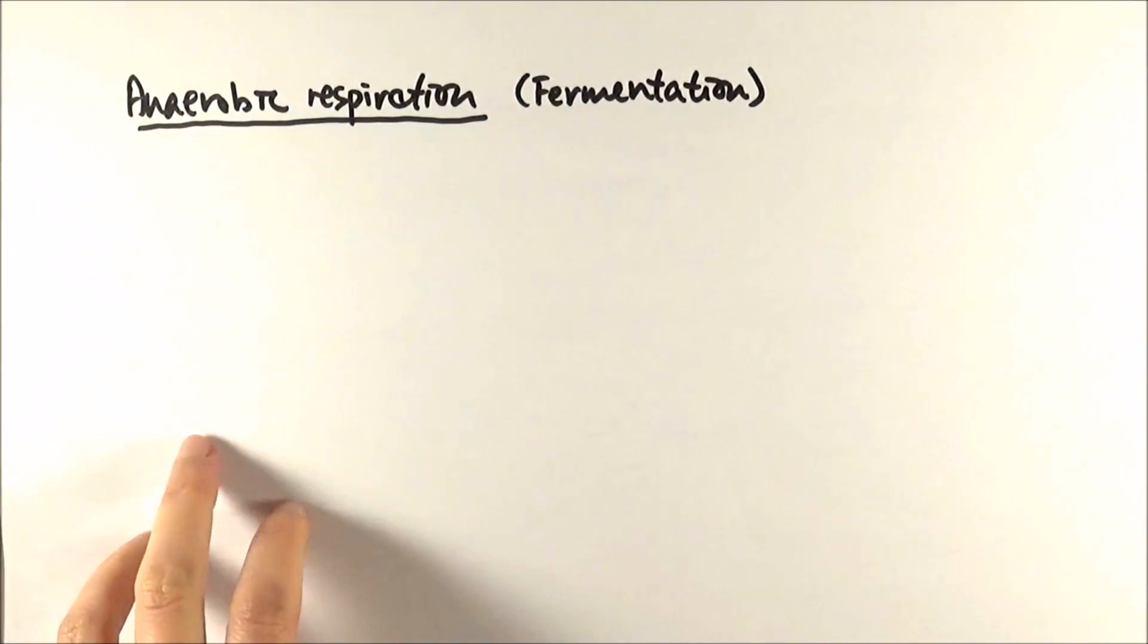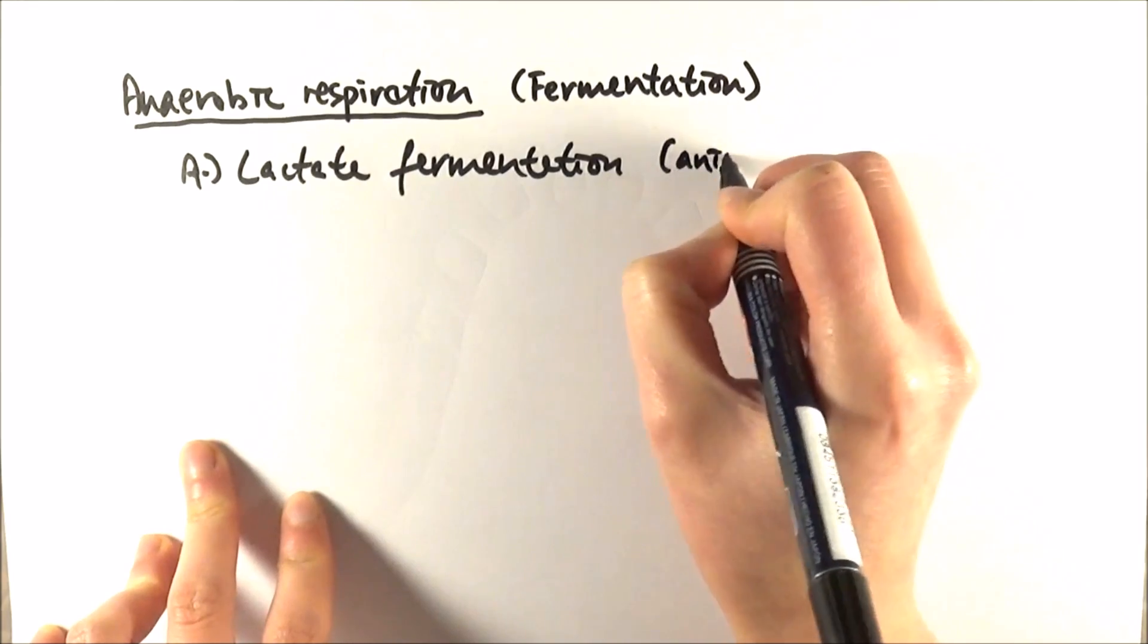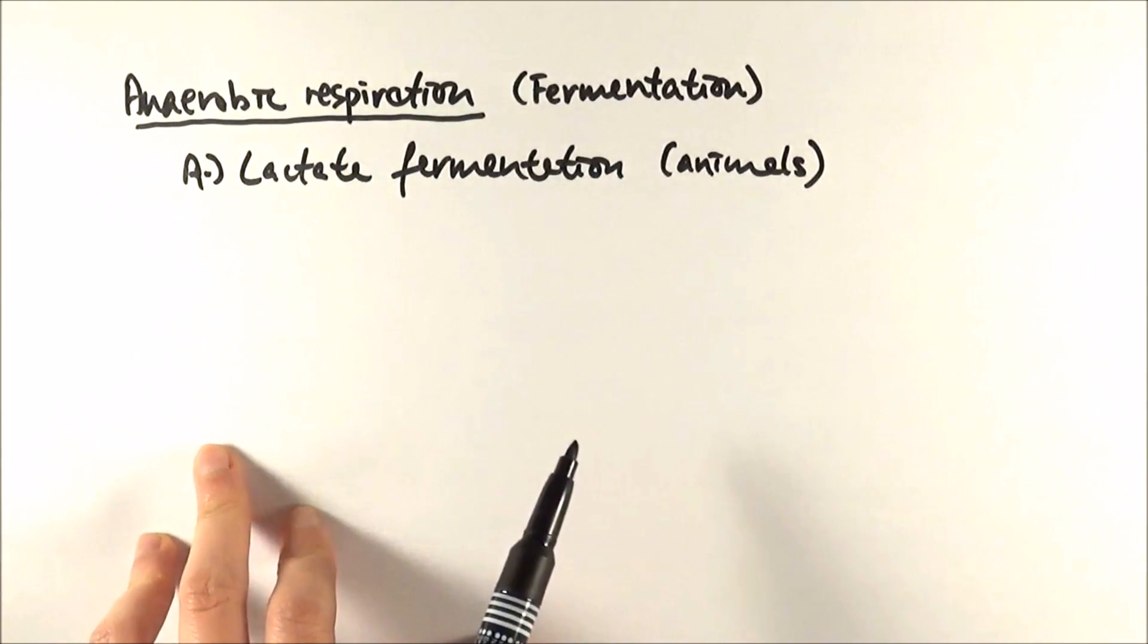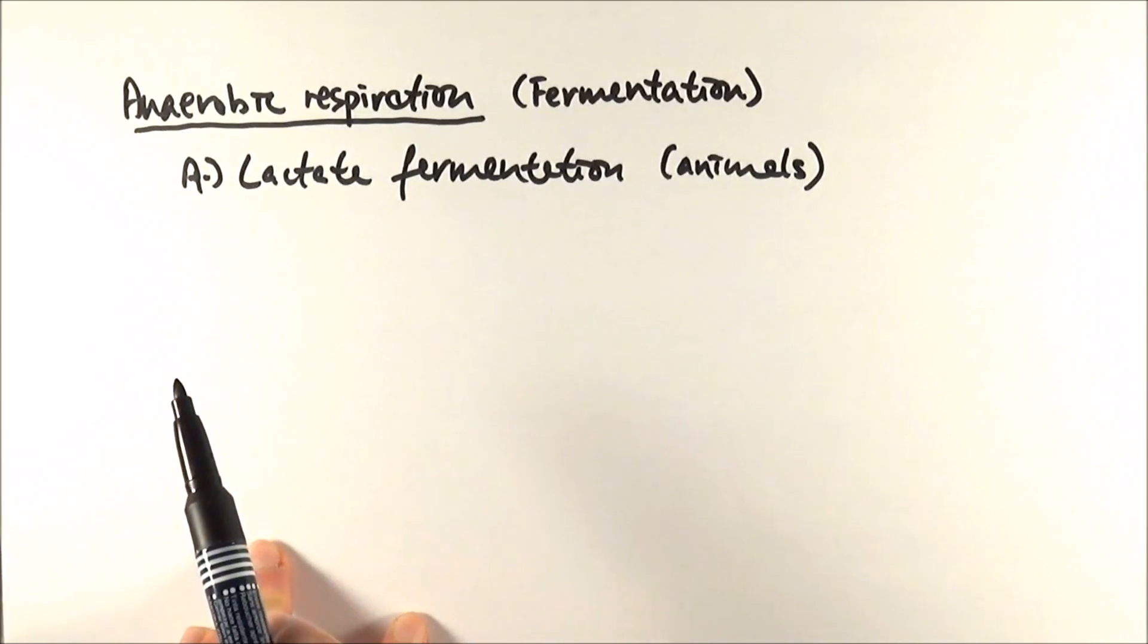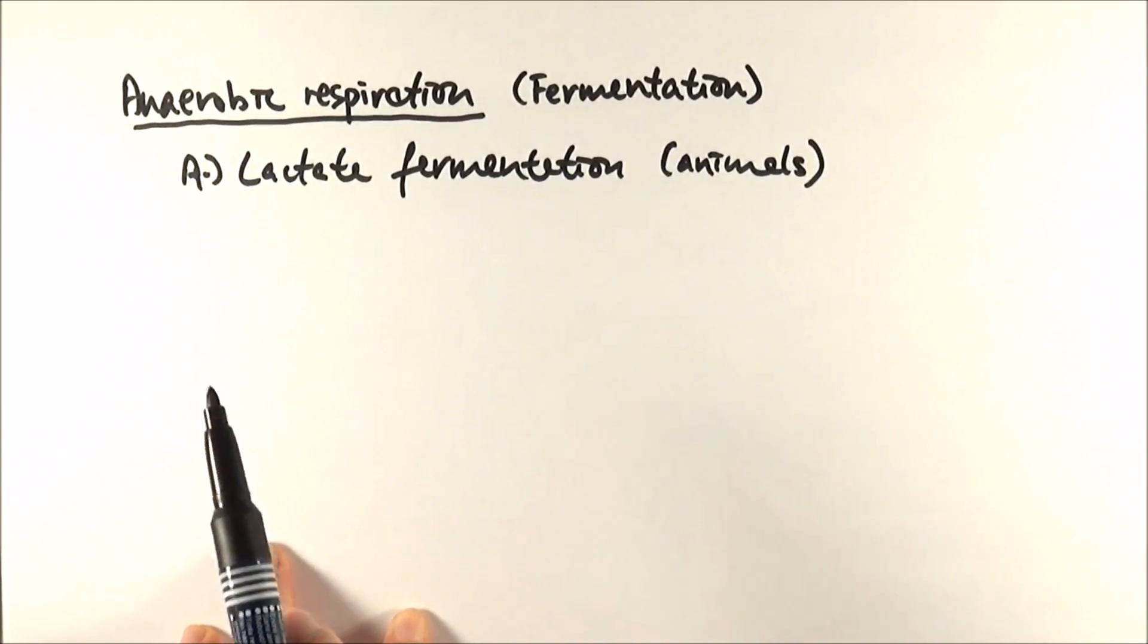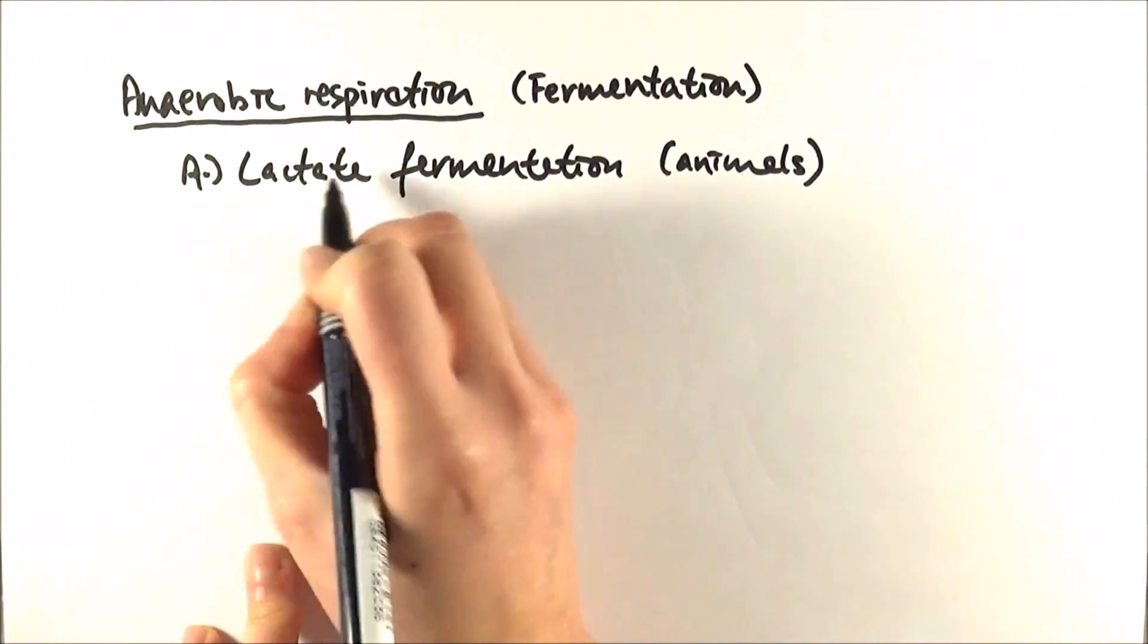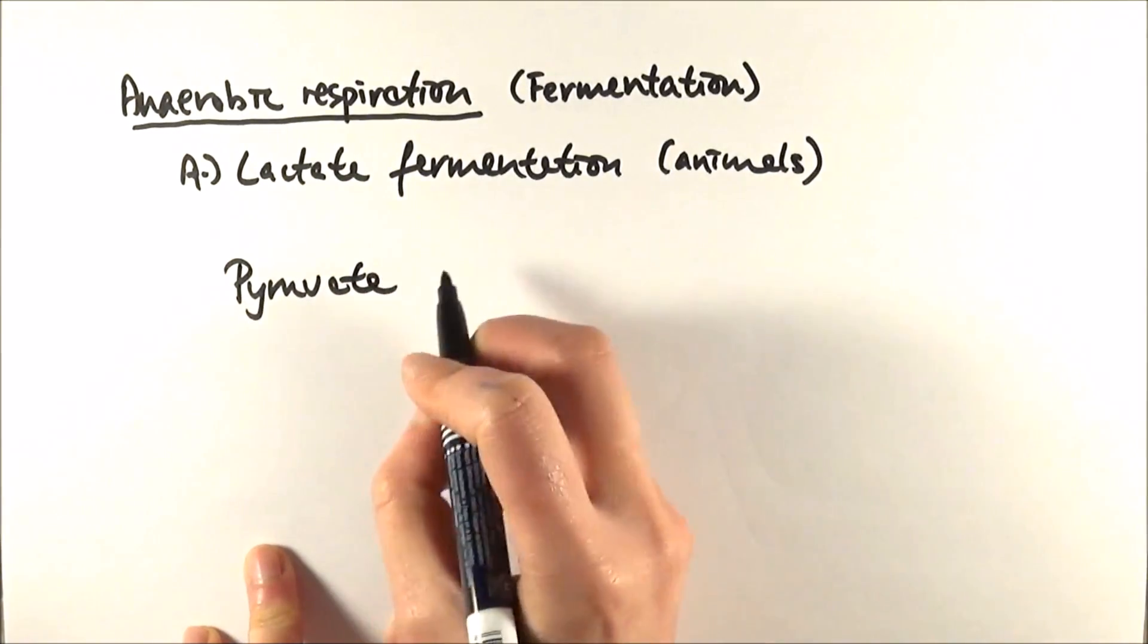So first of all, we'll start off thinking about lactate fermentation. Now, lactate fermentation happens mainly in animals, and you probably will be familiar with it as well because lactate is basically lactic acid, which you know is what our body makes if we have intense exercise when we don't have enough oxygen. As I mentioned before as well, the first stage of respiration is glycolysis, and that happens in the cytoplasm. And it occurs regardless of what type of respiration you're doing. So if a body doesn't have enough oxygen, it will stay in the cytoplasm and undergo this particular reaction here. So we've got pyruvate as a product from glycolysis, and it will start there.